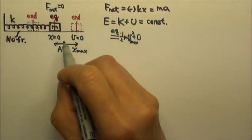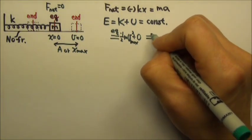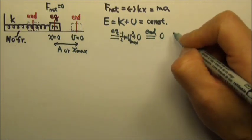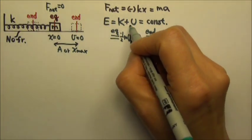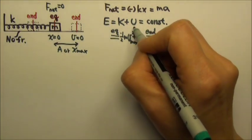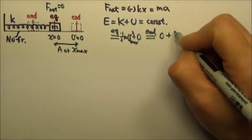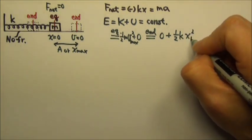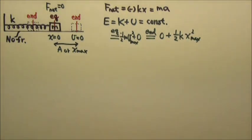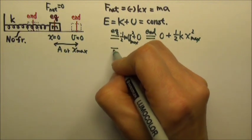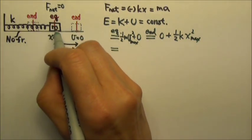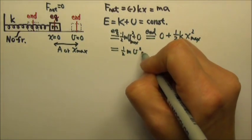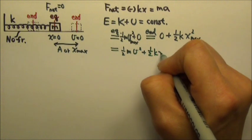The maximum speed happens at the equilibrium. At the endpoint, because the speed is zero, there is no kinetic energy — all of the energy is in the potential energy, so we have maximum potential energy at the endpoint. The maximum potential energy is one-half k times the amplitude squared. If the box is anywhere between the endpoint and the equilibrium, we have both one-half mv² and one-half kx².